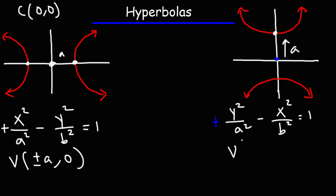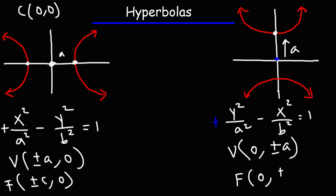The coordinates for the vertices of the vertical hyperbola are zero comma plus or minus a. The coordinates for the foci are plus or minus c comma zero for the horizontal hyperbola, and zero comma plus or minus c for the vertical one. The foci are always located towards where the hyperbola opens up, and it's c units away from the center.